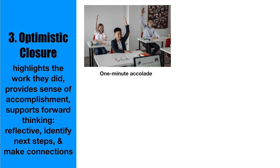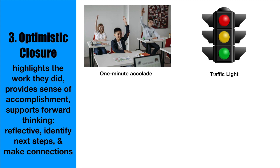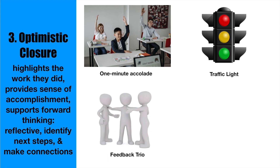You set the timer for one minute and students rapid-share their responses. Or students reflect in groups using the traffic light activity: red means things to stop doing, yellow means things to continue doing, and green means things to start doing. In feedback trios, each student gets 30 seconds to share a best practice and one question they're stuck on. The other members problem-solve that question for one minute while the presenter takes notes. Then it's the next presenter's turn. At 90 seconds per person, this activity can take just under five minutes for a trio to share ideas and receive help.